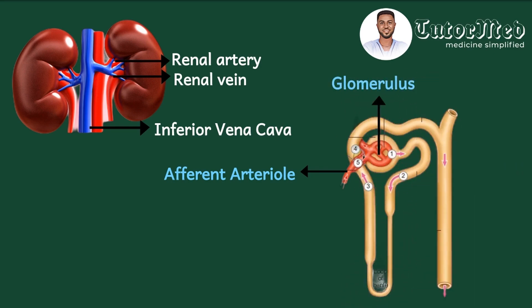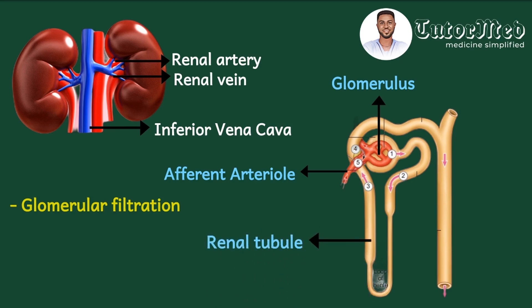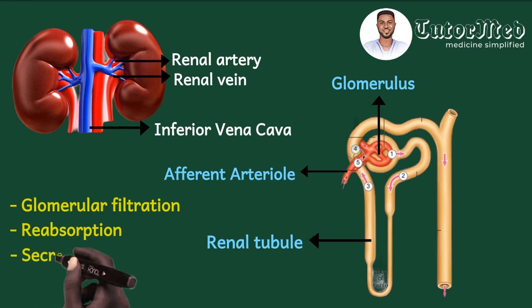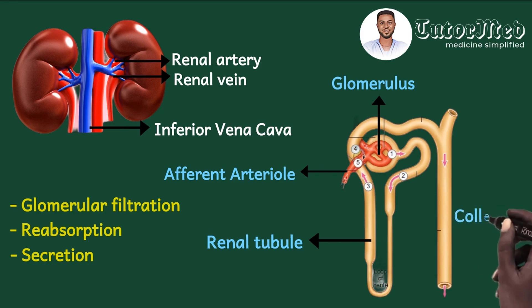At the glomerulus, the first process involved in urine formation takes place: glomerular filtration. After the glomerulus has filtered the blood, the filtrate enters the Bowman's capsule and then journeys through a series of renal tubules, where the second and last processes of urine formation take place — reabsorption and secretion. Afterwards, the filtrate exits the collecting ducts, where water may be absorbed, and then enters the collection system: the renal pelvis, the ureters, the bladder, and finally comes out as urine.